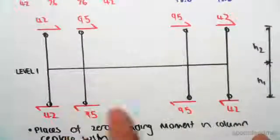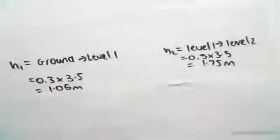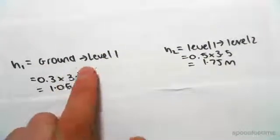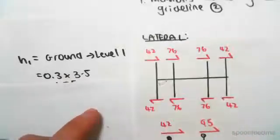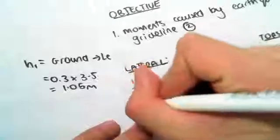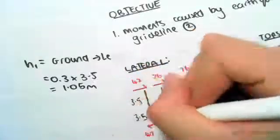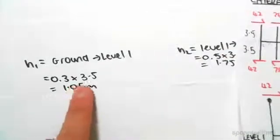The places of zero bending moment in the column we're just replacing with the pin. Generally speaking, the location of that pin when you go from ground to level 1 is going to be 0.3 the height of the column. We know the column is 3.5 meters, so the column distance is 3.5, so that pin over there is going to be 0.3 times 3.5.